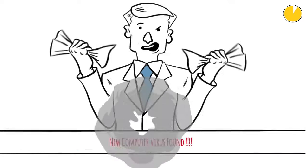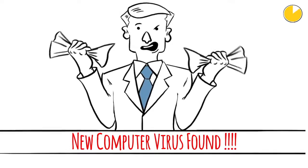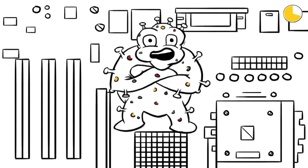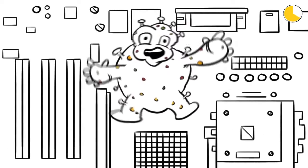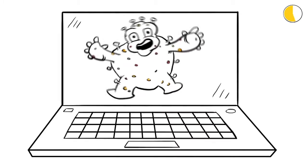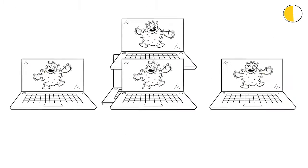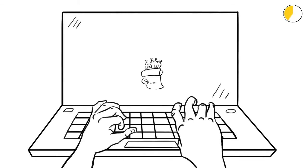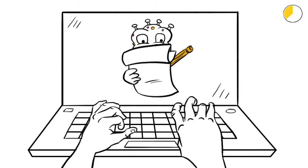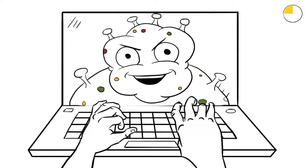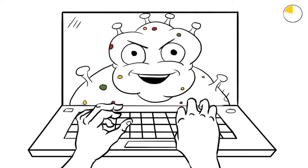We hear about them in the news almost weekly these days. But what is a computer virus anyway? The definition of a computer virus is a malicious piece of software, or malware, that once inside your computer, replicates and infects other computers in your network — stealing passwords or data, logging keystrokes, corrupting files, spamming your contacts, or even taking over your machine.